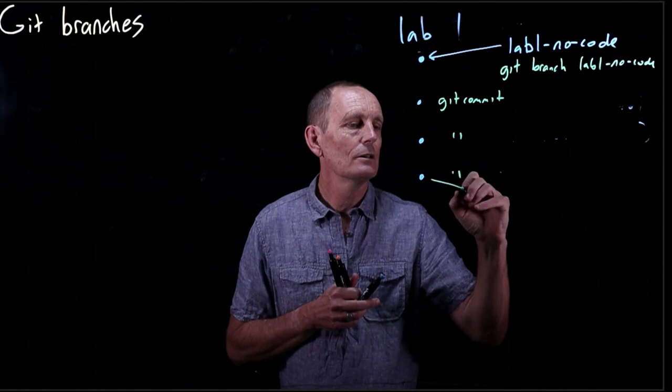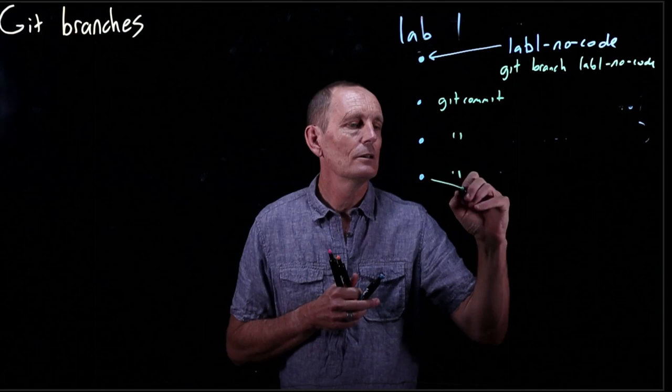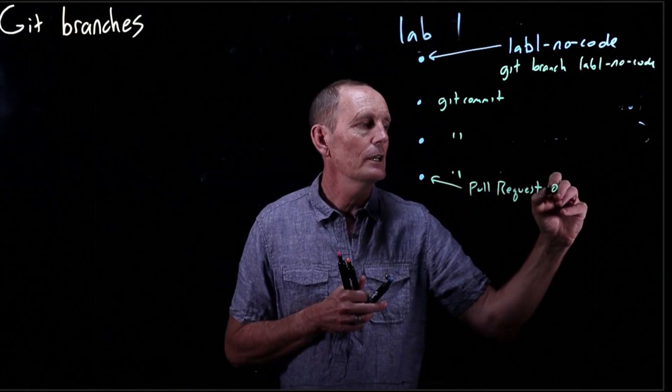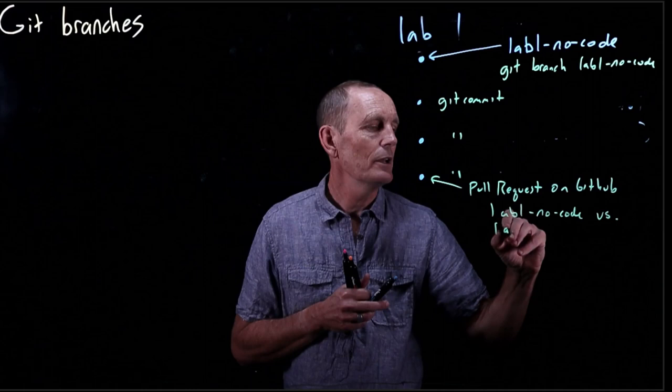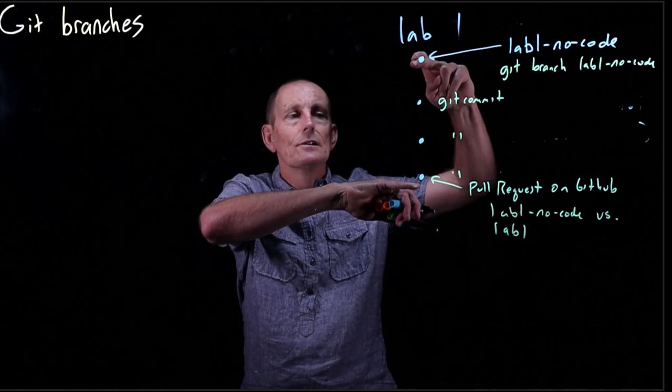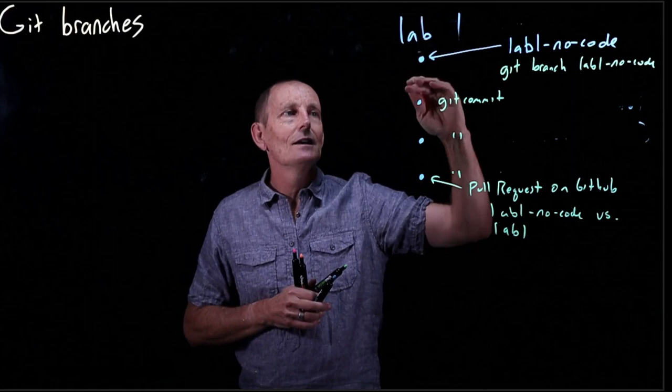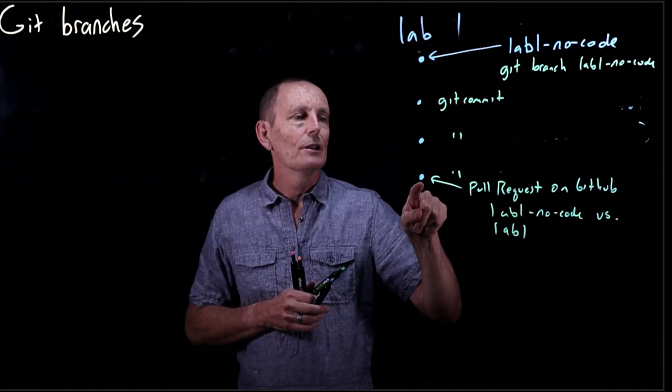So you are going to do a pull request on GitHub. And you're going to be comparing lab one no code versus lab one. So that is going to be comparing the difference between here and here. Because lab one changes as you continue making commits, lab one refers to the last commit. So lab one is this. Lab one no code is this. You are going to be submitting pull requests for the delta.